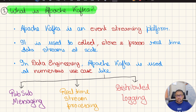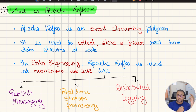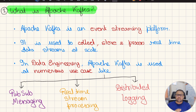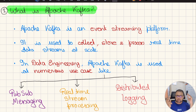In data engineering, Apache Kafka is actually used in two main use cases. The first is as a pubsub messaging system and another one is real-time stream processing. There is a third use case which is used but less commonly in the data engineering domain, which is distributed logging. So we will focus on the two major things.